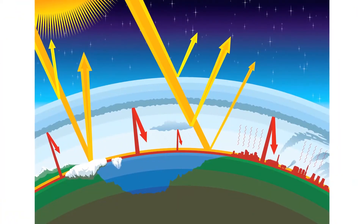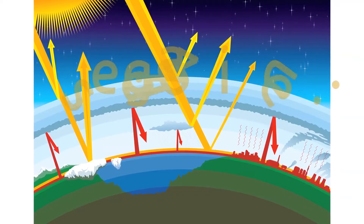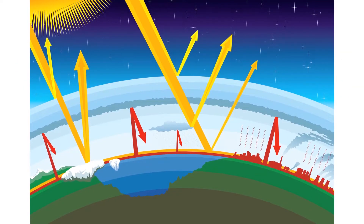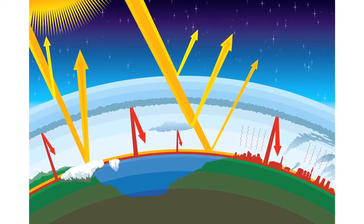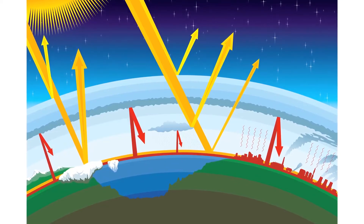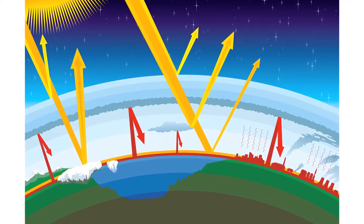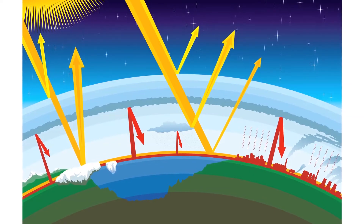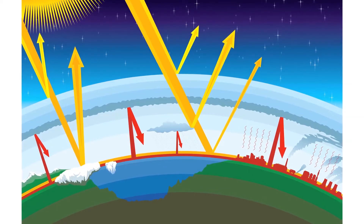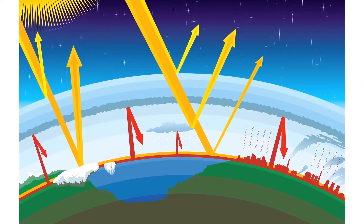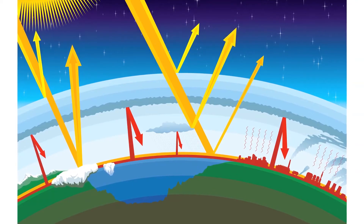The greenhouse effect is a phenomenon that indicates our planet's capacity to hold back a part of the solar energy as a result of the presence in the atmosphere of some gases known as greenhouse gases. The principal greenhouse gases are water vapor, carbon dioxide, methane, and nitrous oxide.